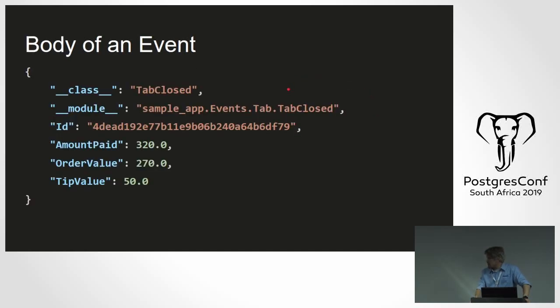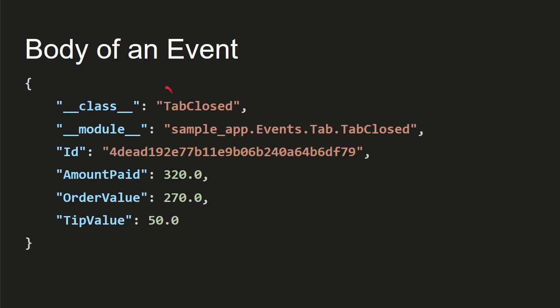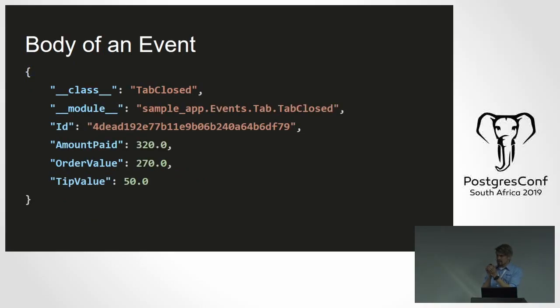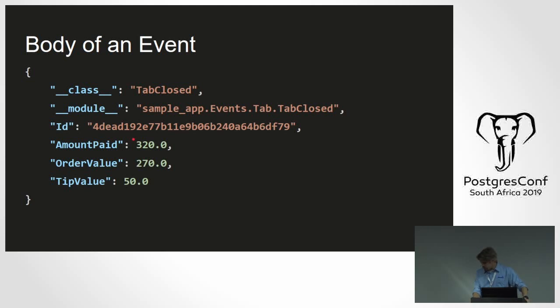This is the body of the event. My solution is Python-specific, so there's a class reference for rehydrating classes. But the key point is: you don't want to capture too much irrelevant stuff. You want to break your events quite granularly so that you only capture the essence of what state change actually occurred. For instance, 'tab closed' — we close the tab by paying the amount, and that's all we capture in this event.